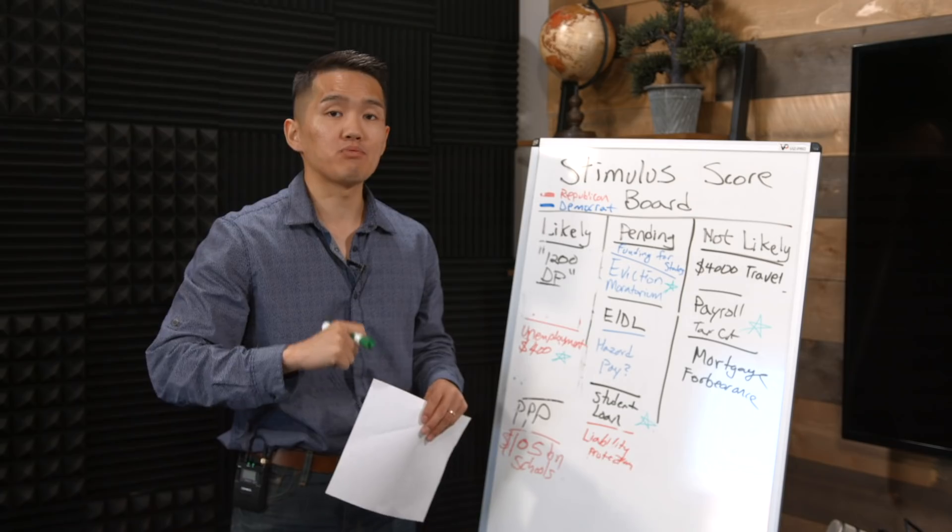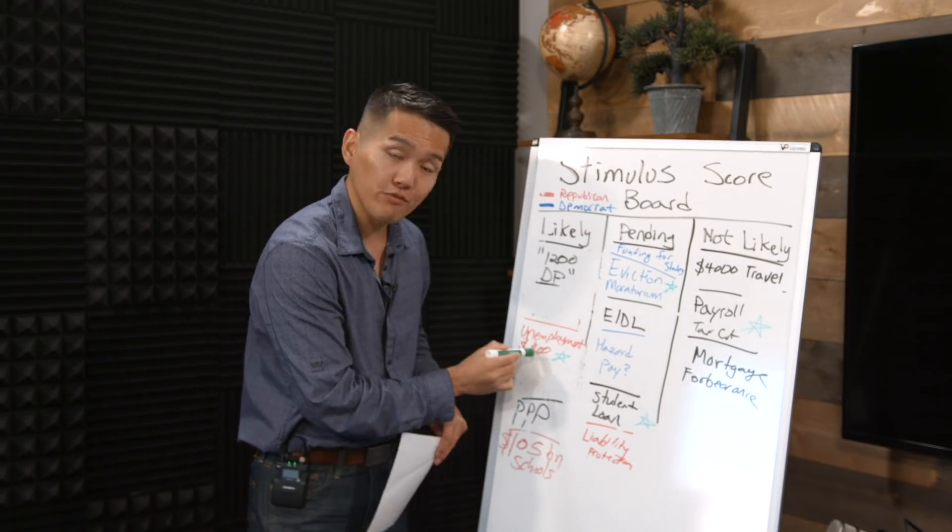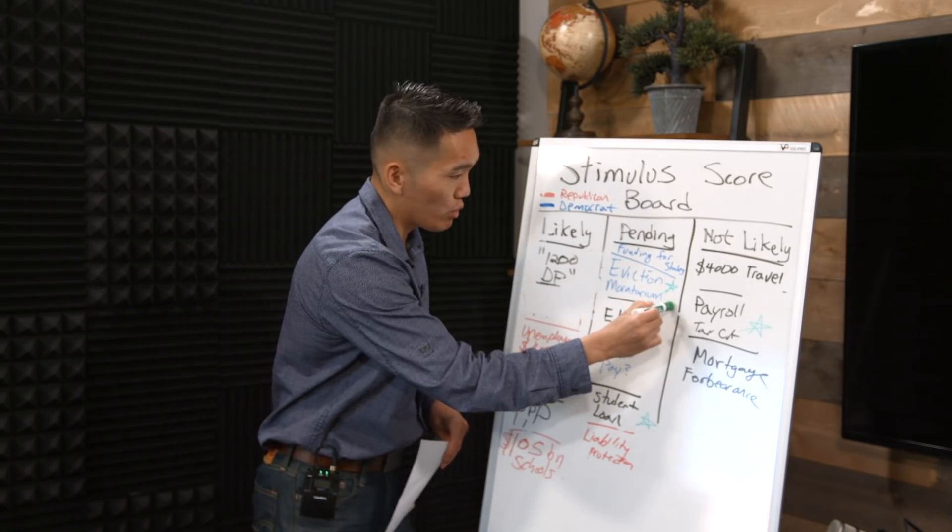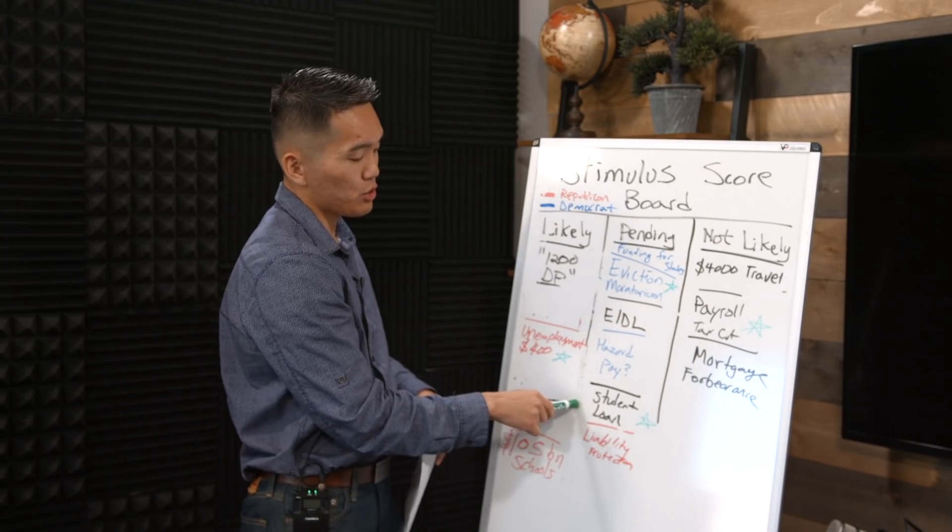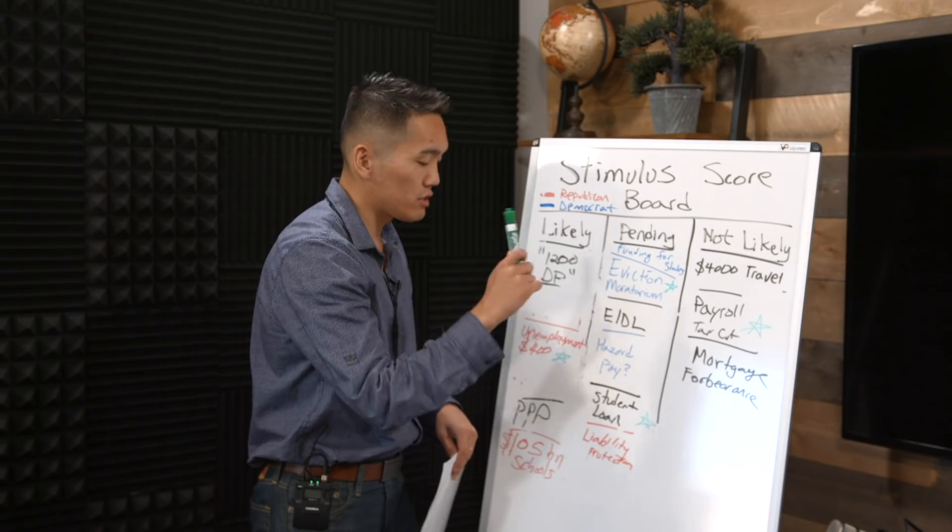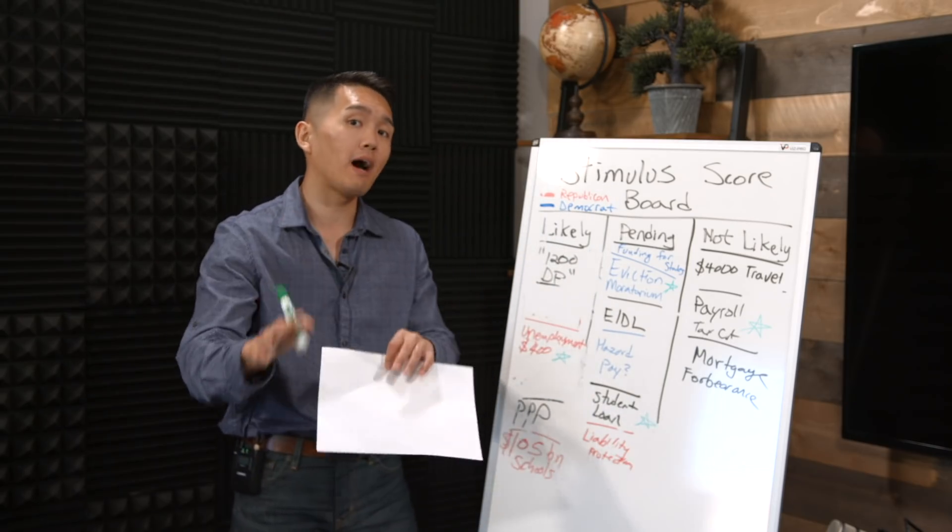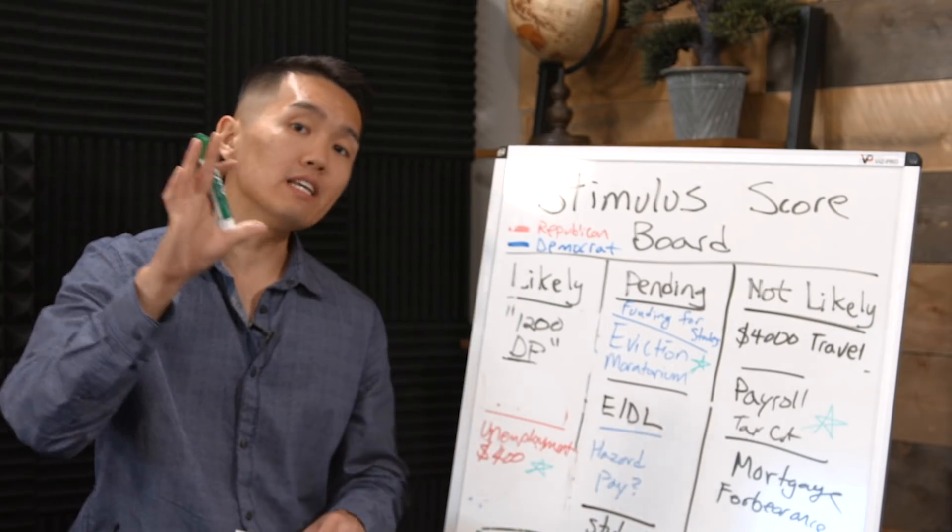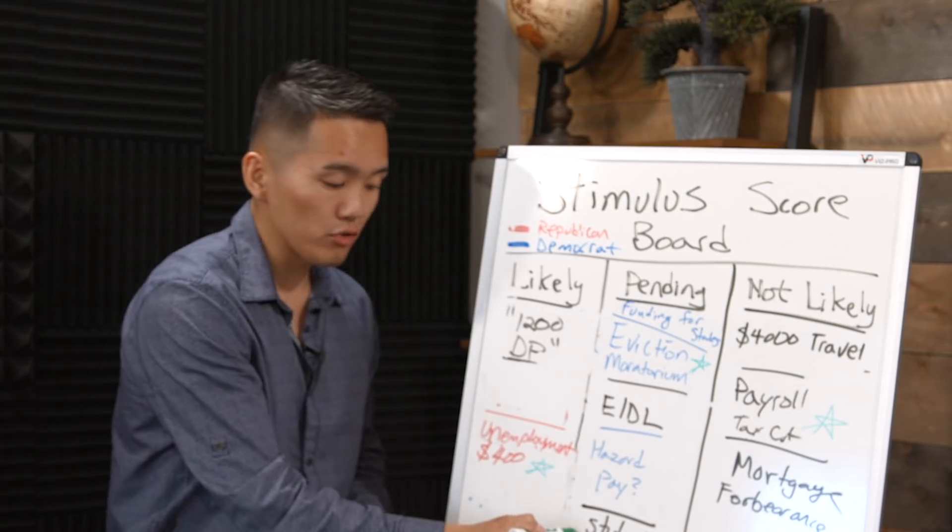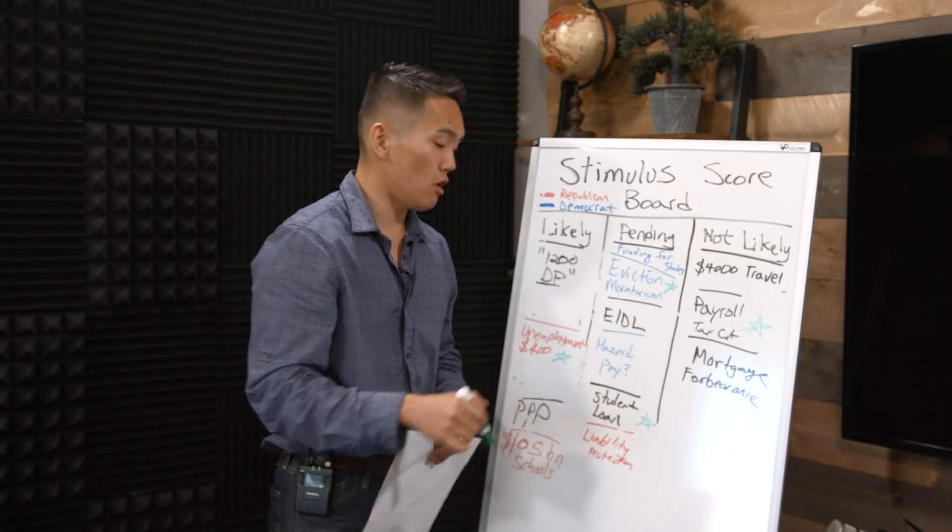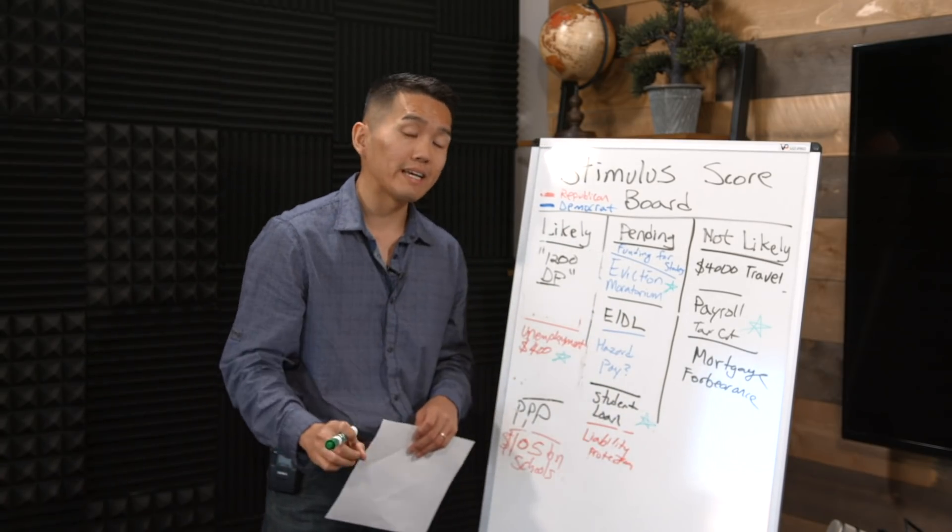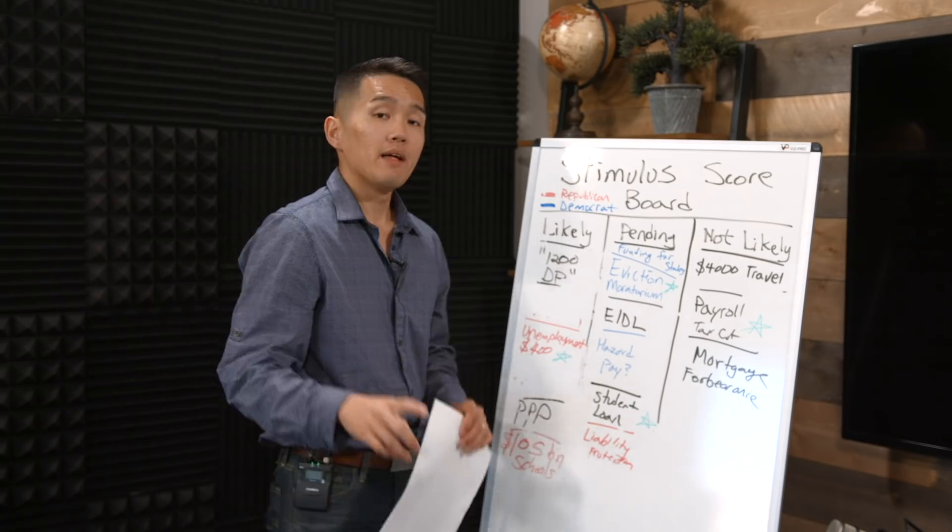Overall, those are all the executive orders that President Trump signed. The unemployment benefit of $400 a week, an eviction moratorium, payroll tax deferment not a cut, and also an extension of the student loan deferment, which was set to expire September, but now individuals now have until December 31st when their student loan will be at 0% interest, and they do not have to make any payments on the student loans temporarily to December 2020.